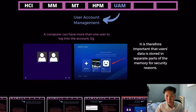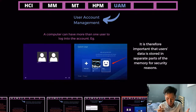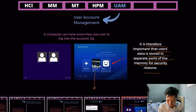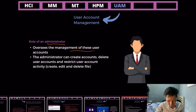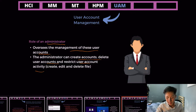The fifth function is user account management. A computer can have multiple user accounts at the same time, enabled via the operating system. User data is stored in separate parts of memory for security — for instance, Tom and Rose's data will be different and not transparent to each other. There is one person known as the administrator — the big boss — who oversees user account management and can create accounts, delete user accounts, restrict activities, and assign each user a rank determining what they can do.